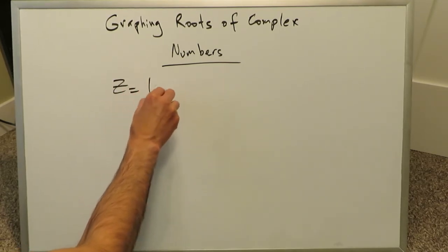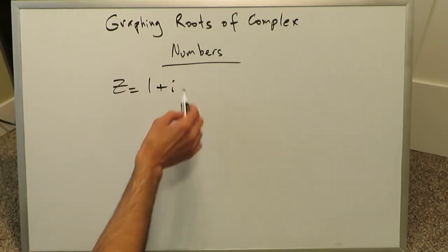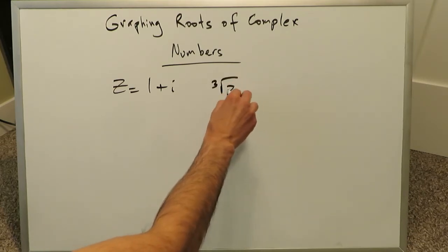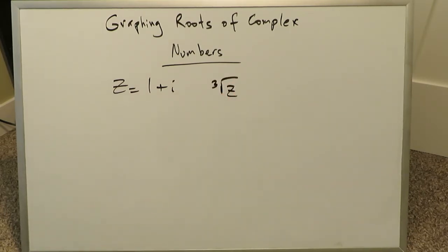In this video, our complex number is 1 plus i. We have to graph it, and we have to find the cube root of this complex number. So we know, based on de Moivre's theorem, n value here equals 3.